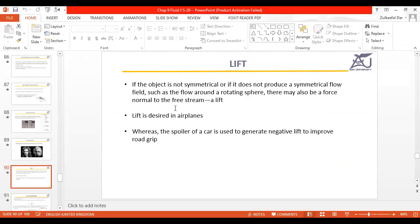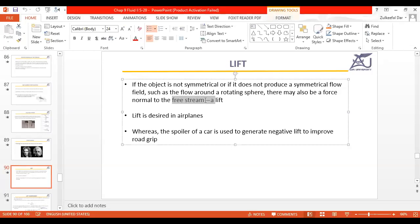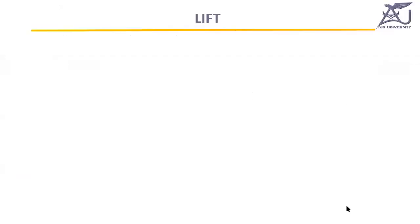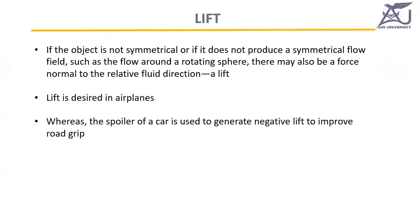Lift is produced when a symmetric or asymmetric flow field is produced around an object, and there may be a force normal to the relative fluid direction. Lift in an airplane is desired, whereas in cars we don't need lift — we actually produce negative lift.